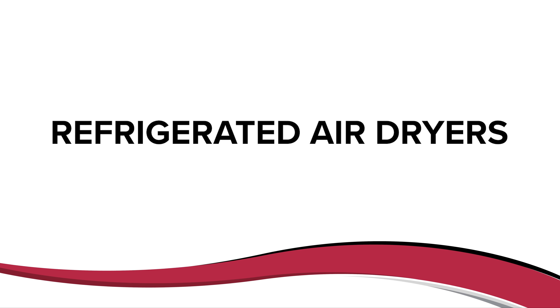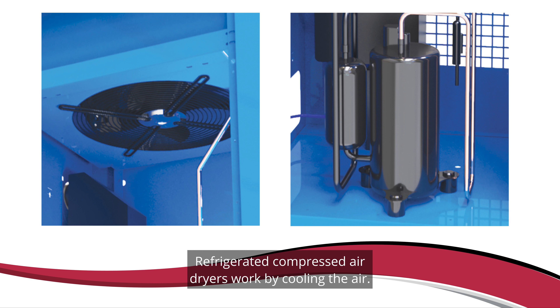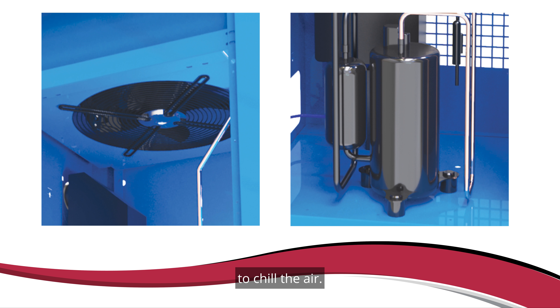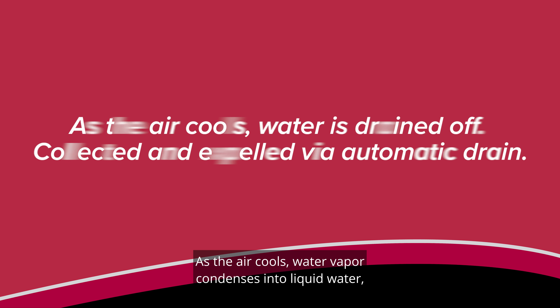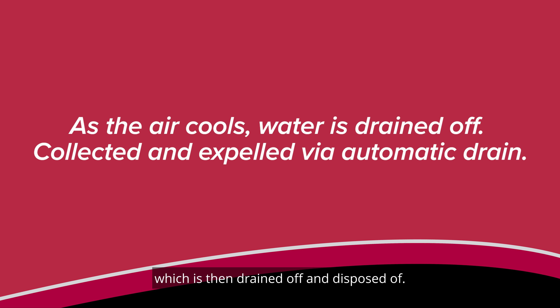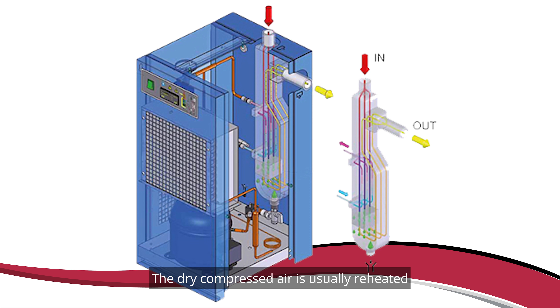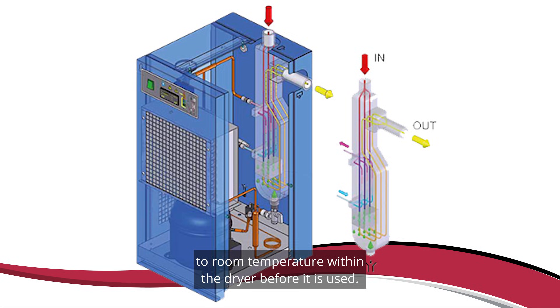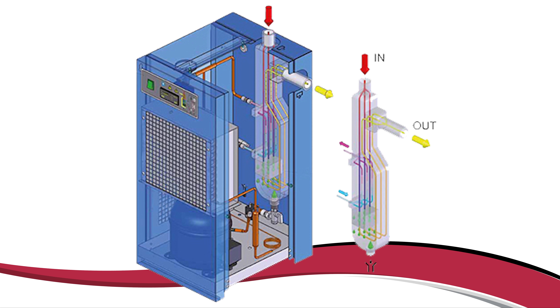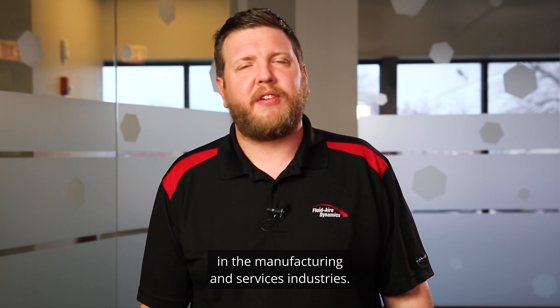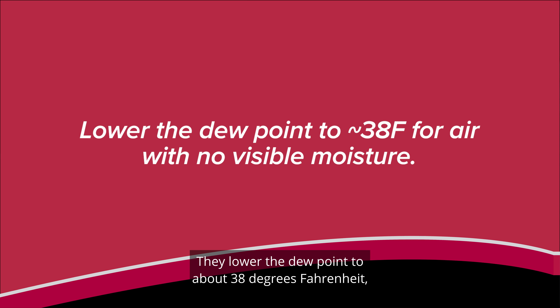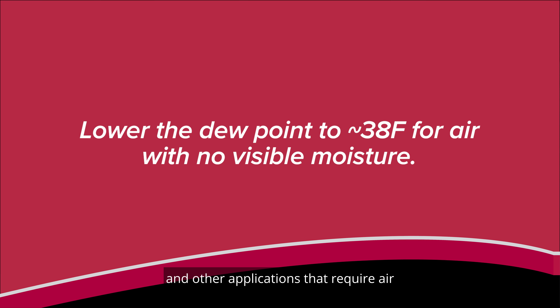Refrigerated air dryers work by cooling the air, much like your refrigerator or freezer, using compressor coils filled with a refrigerant to chill the air. As the air cools, water vapor condenses into liquid water, which is then drained off and disposed of. The liquid is collected in a water trap and expelled via an automatic drain. The dry compressed air is usually reheated to room temperature within the dryer before it is used. Refrigerated dryers are the most commonly used air dryers in the manufacturing and services industries. They lower the dew point to about 38 degrees Fahrenheit.